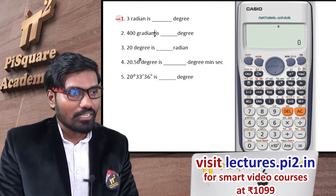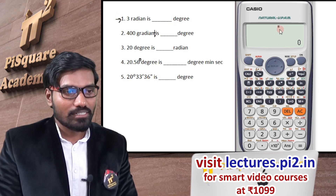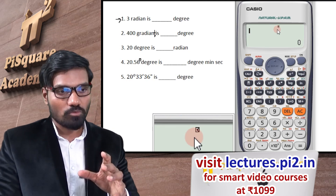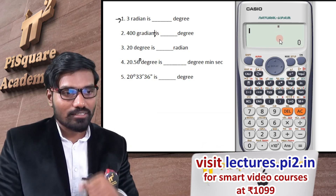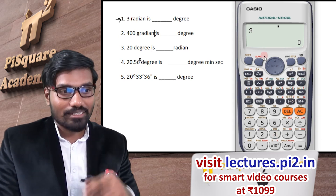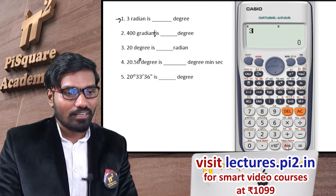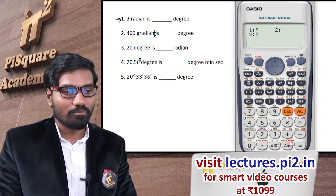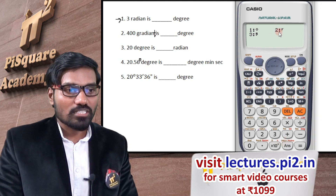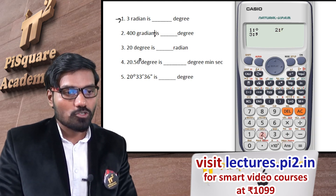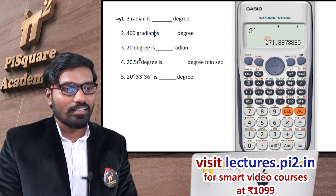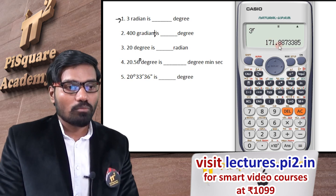First, I want to convert 3 radians into degrees. The calculator is in degrees mode, so the output will be in degrees. I enter 3, then press Shift and the DRG button, which gives options for degree, radian, and gradient. I choose radians — option 2. So 3 radians, press equals: the result is 171.88 degrees.